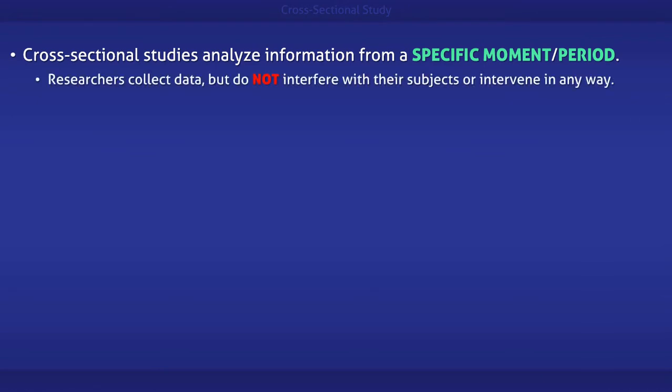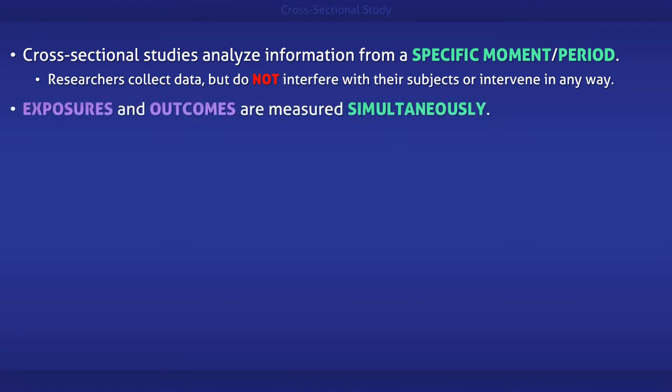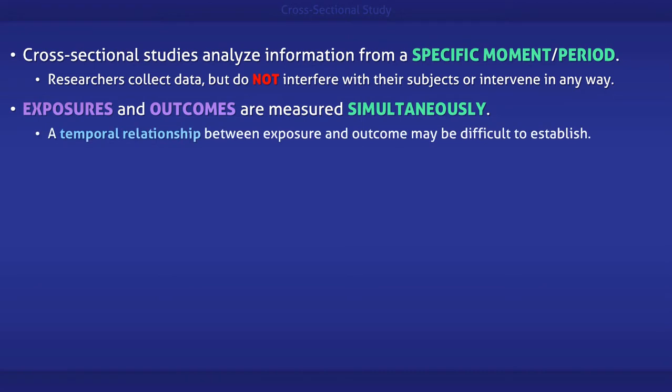Cross-sectional studies analyze information from a specific moment or period. It is an observational type of study because researchers do not interfere with their subjects or intervene in any way. Characteristically, exposures and outcomes are measured simultaneously. Consequently, it can be difficult to determine which came first, the exposure or the disease.